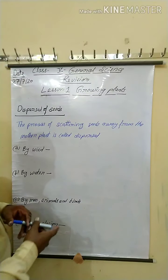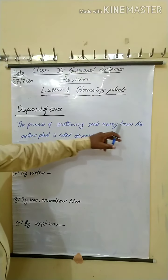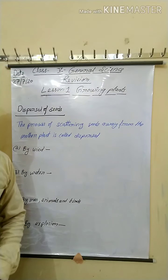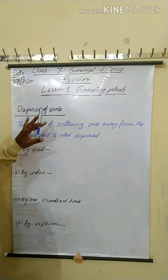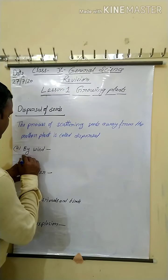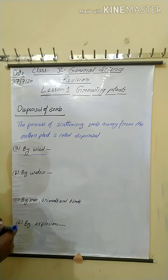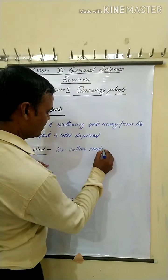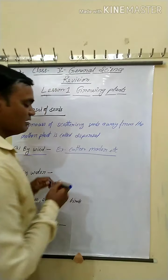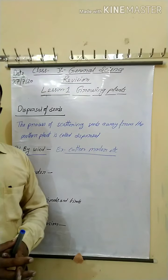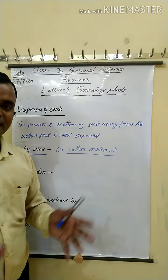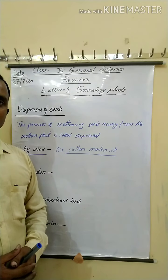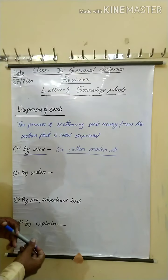The process of scattering seeds away from the mother plant is called dispersal of seeds. There are four processes. First, by wind: some plants like dandelion, cotton, and similar plants have hairy seeds that are lightweight. Due to their light weight and hairy structures, the seeds move from one place to another by the wind.